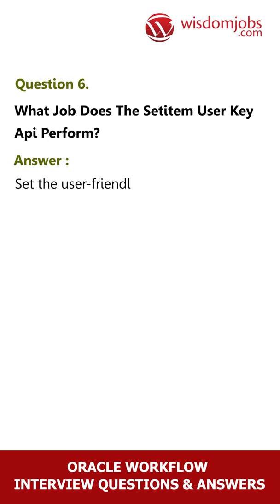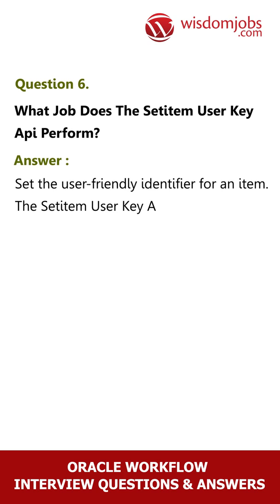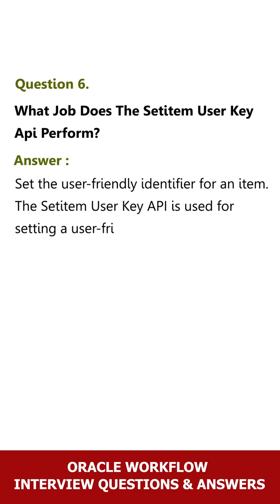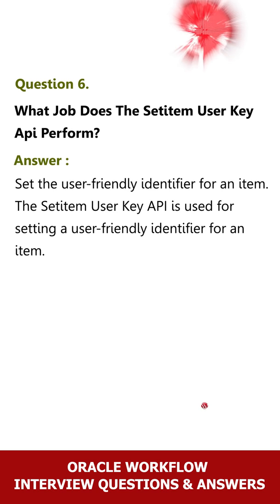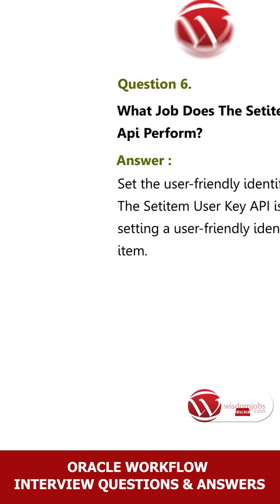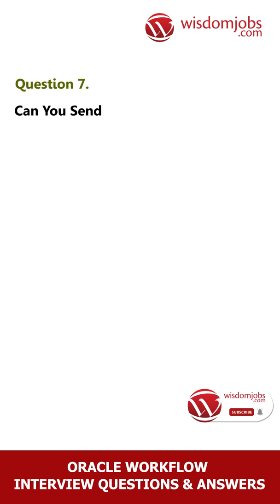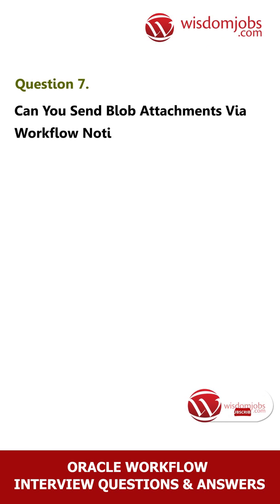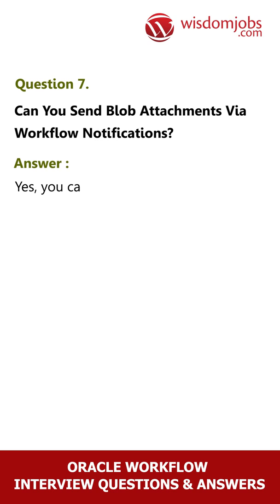Question 6: What job does the Set Item User Key API perform? Answer: It sets the user-friendly identifier for an item. The Set Item User Key API is used for setting a user-friendly identifier for an item.